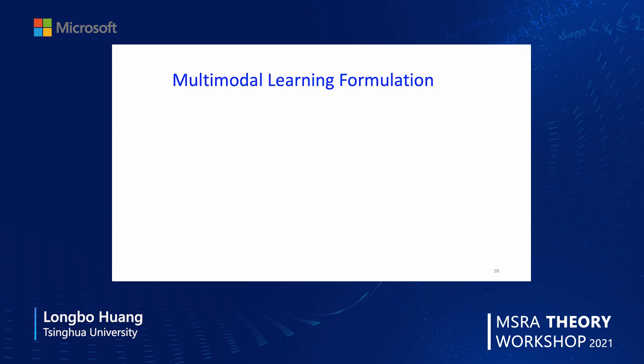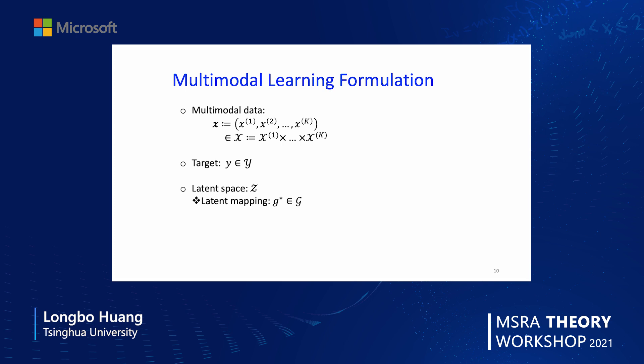Our mathematical model is as follows. We are given multi-modal data x = (x_1, ..., x_k) where k is the number of modalities, each x_i belonging to some joint input space. For each data x there is a target y in the target space. There is also a latent space — we assume there exists a true latent mapping g that maps from the data space into the latent space, and a task mapping h from the latent space to the output.